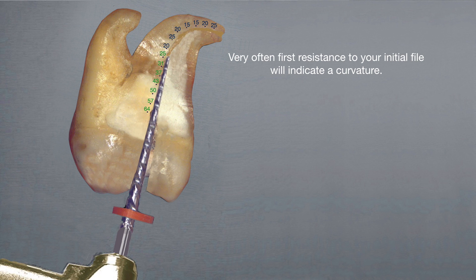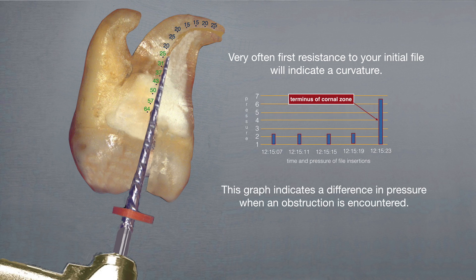As we've clearly seen from our research, this graph indicates a difference in pressure when an obstruction is encountered by a file in a canal.